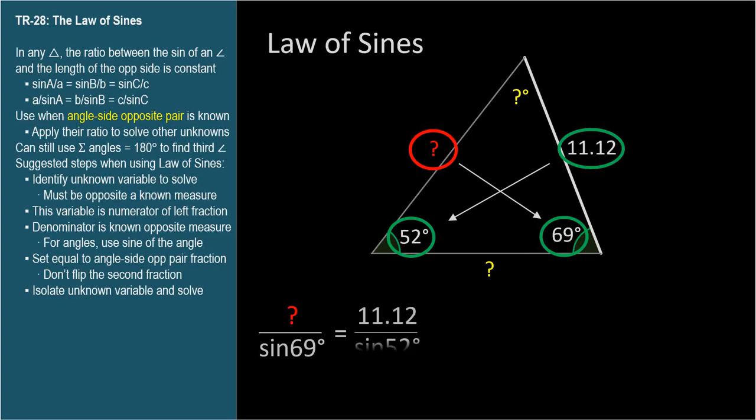This fraction is equal to the same ratio between the angle-side opposite pair we already know. Don't accidentally flip the two fractions. The angle should be in the numerator of both, or the denominator of both. When we isolate the unknown variable, we end up multiplying the right fraction by the denominator of the left fraction. That's why it's a good idea to always start the law of sines with the unknown in the numerator of the first fraction.